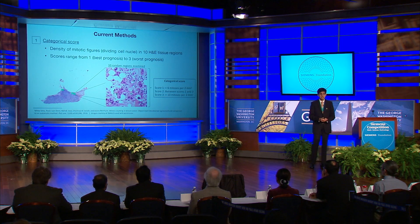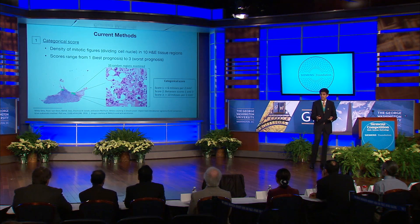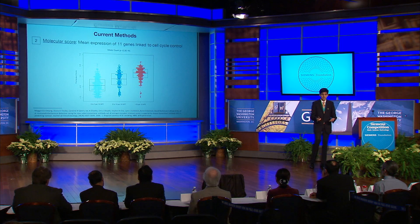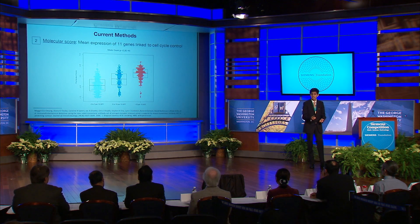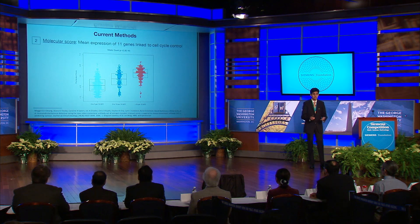Current methods for assessing tumor proliferation are both categorical and molecular in nature. The categorical score is determined based on the mean number of mitoses over 10 randomly sampled tissue regions, ranging from 1 to 3, with a higher score indicating a worse prognosis. The molecular score is defined as the mean RNA expression of 11 clinically verified proliferation-associated genes, ranging from negative 1 to 1, with a higher score indicating a higher tumor proliferation speed.